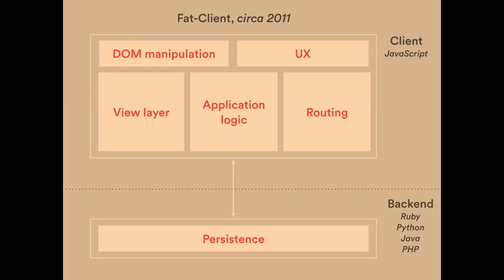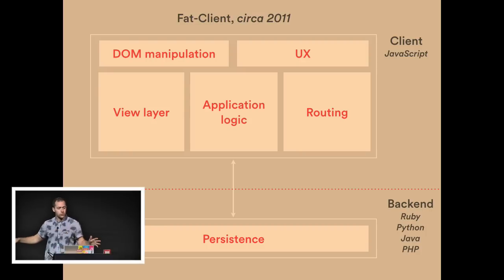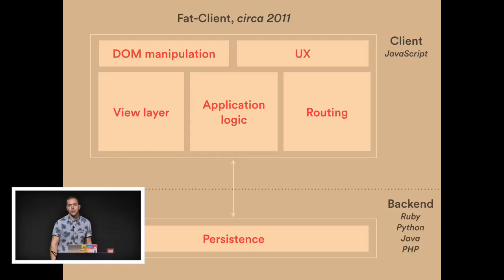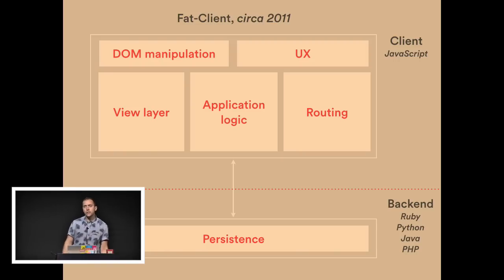More recently we saw the rise of fat client JavaScript apps, around 2011 when Backbone got really popular, along with Sproutcore, Ember, and other libraries. We finally had the ability to push a lot of our application into the web browser and write the whole thing in JavaScript — the single page app. We moved the view layer, application logic, and routing up into the web browser. You don't always have to wait for a full page load when navigating between pages. But there are some problems with this approach.